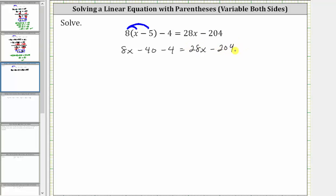Notice the right side does not simplify because we don't have like terms. But we do have like terms on the left. We can combine the negative 40 and negative four. Negative 40 minus four is equal to negative 44, and therefore the left side simplifies to 8x minus 44 equals 28x minus 204.